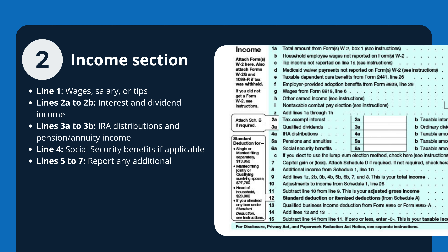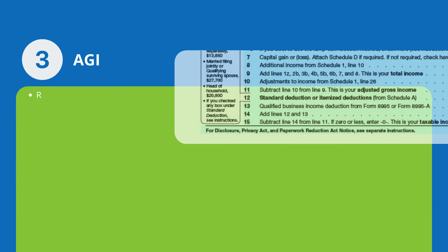Report any additional sources of income on lines 5 to 7. Calculate your total income on line 9 by adding up lines 1 to 8. Moving on to AGI,